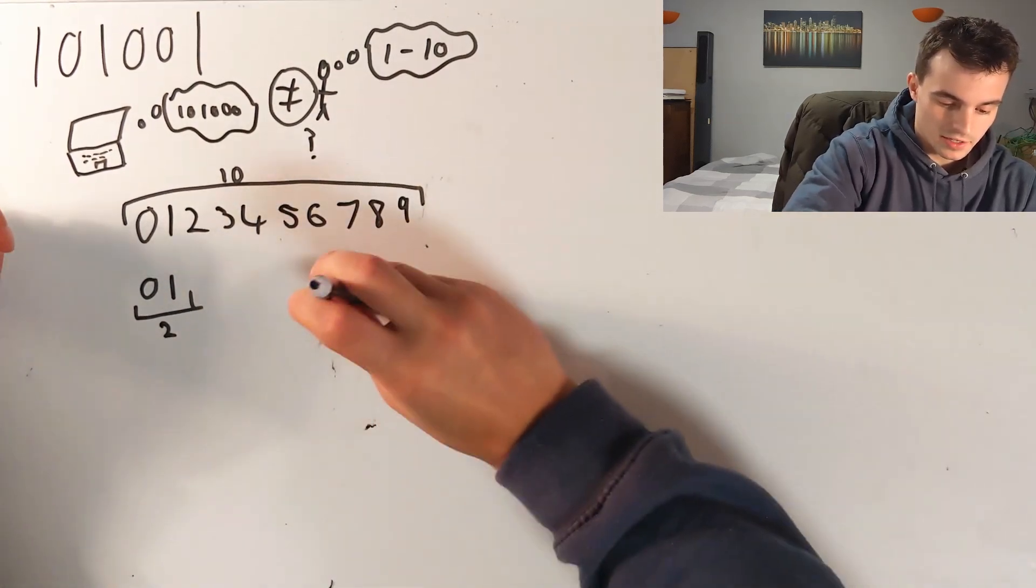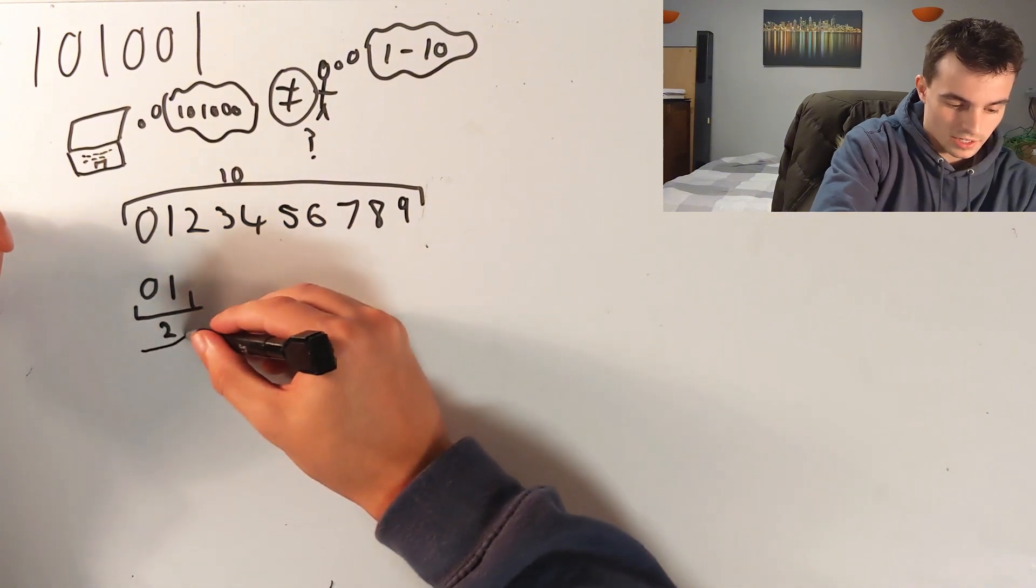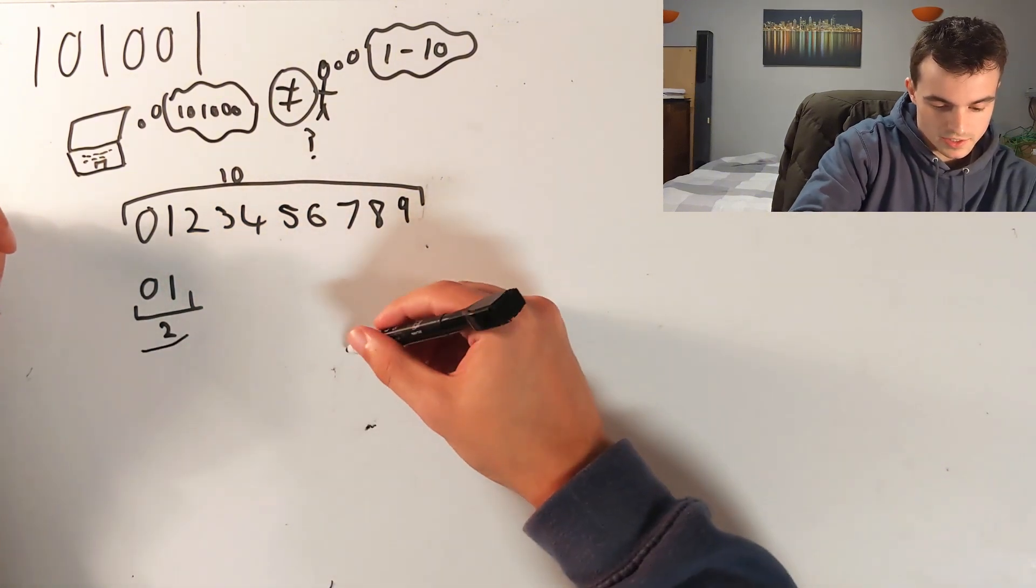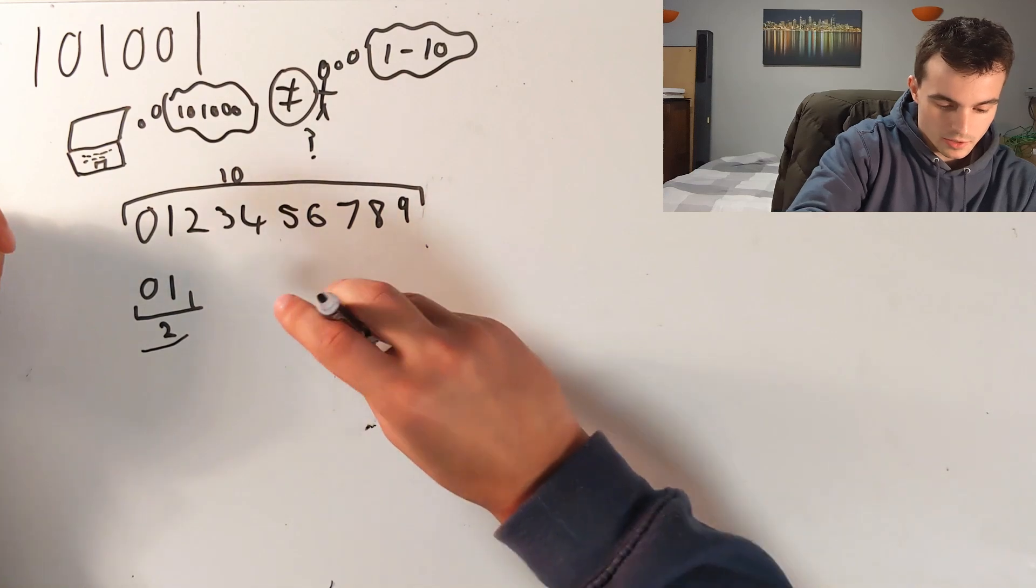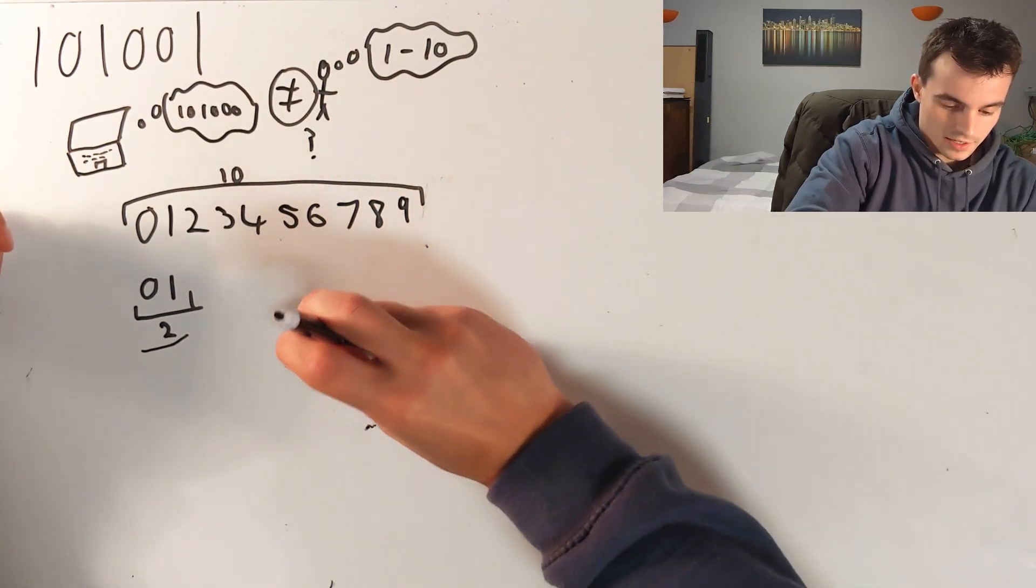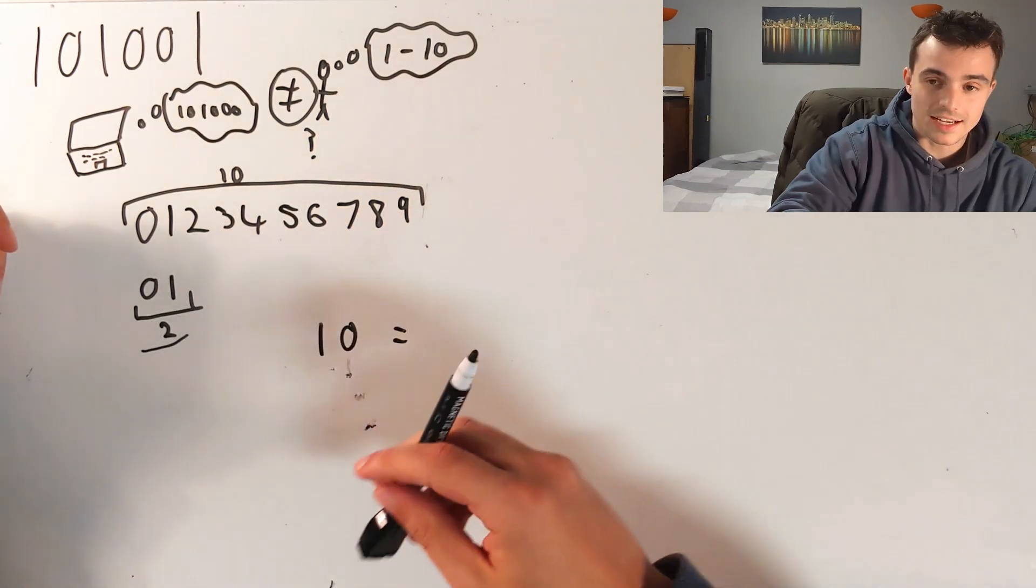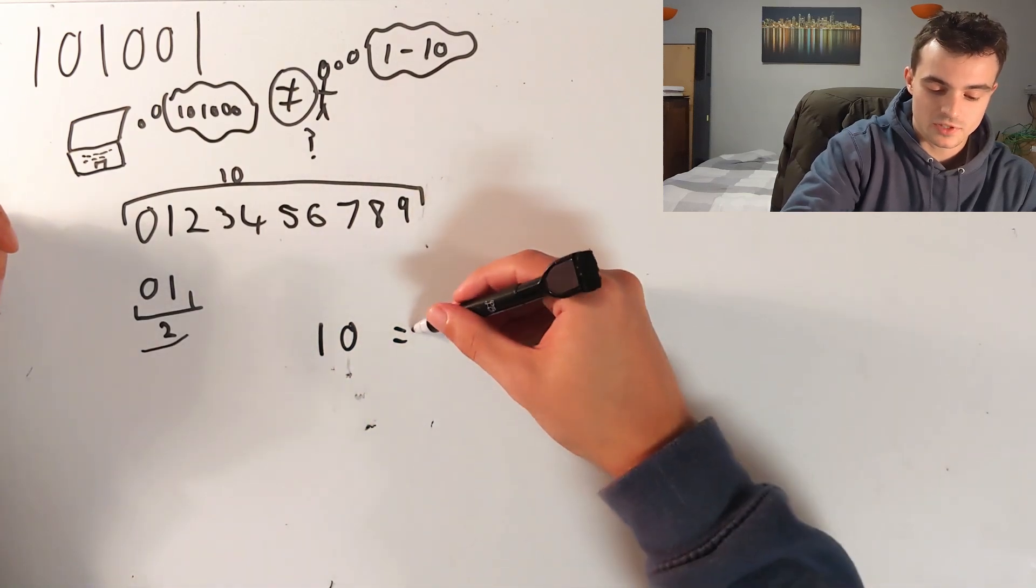But if we only have zero and one like this, we say zero, we say one, and then we go back to zero again and we put a one here. And this equals two.